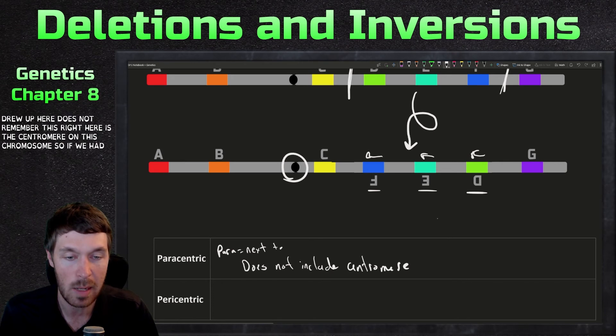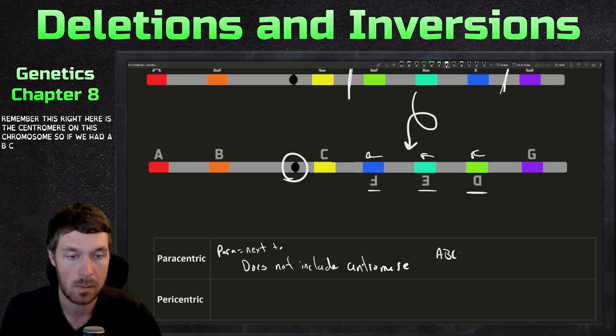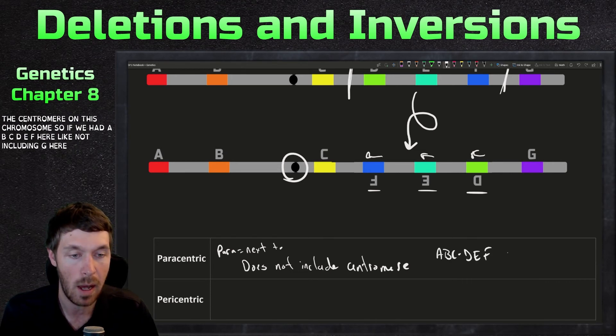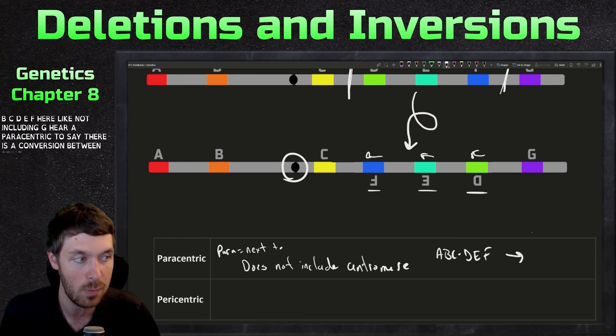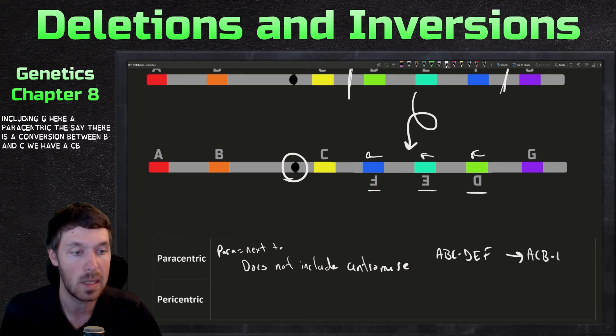So this is kind of what we drew up here. It does not include the centromere. This right here is the centromere on this chromosome. So if we had ABCDEF here, like not including G here, a paracentric, let's say there's an inversion between B and C, we'd have ACBDEF. But not including the centromere right here.